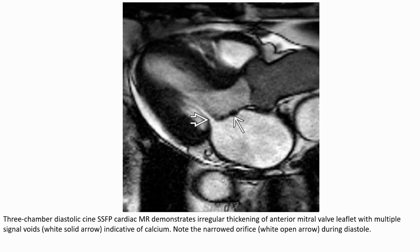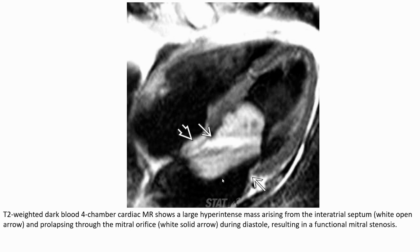This MRI image demonstrates focal thickening of the anterior mitral valve leaflet with multifocal areas indicated by the wide slit arrow, indicative of calcification. Note the narrowing of the orifice during diastole, indicated by the wide open arrow. These MRI images show a large hyperintense mass arising from the inter-atrial septum collapsing through the mitral orifice during diastole, resulting in extrinsic functional mitral valve stenosis.